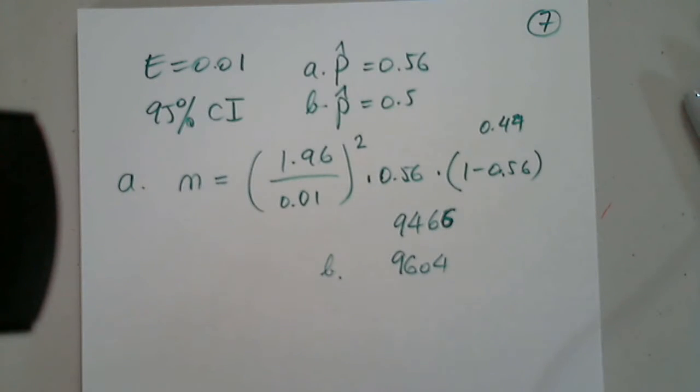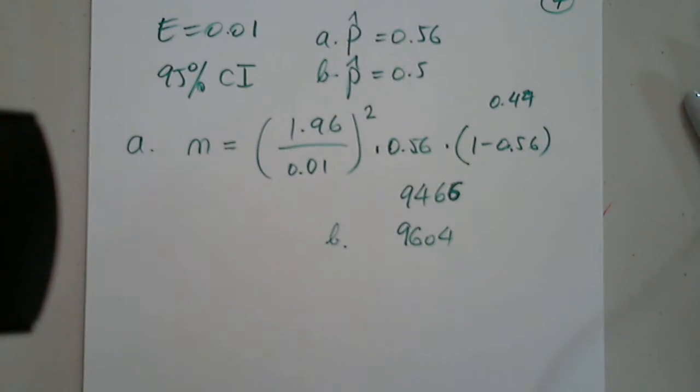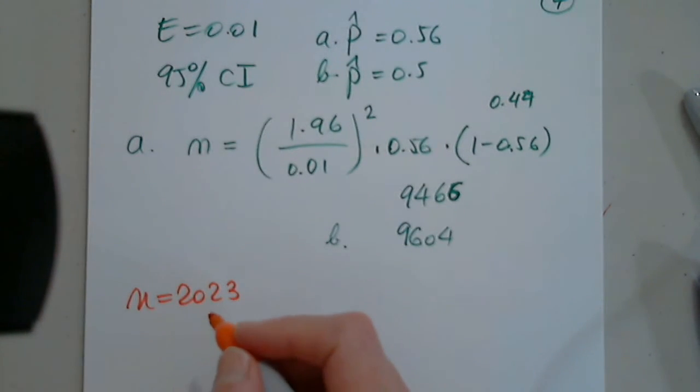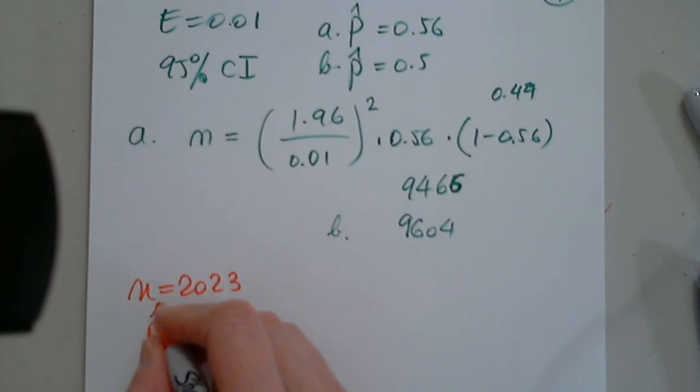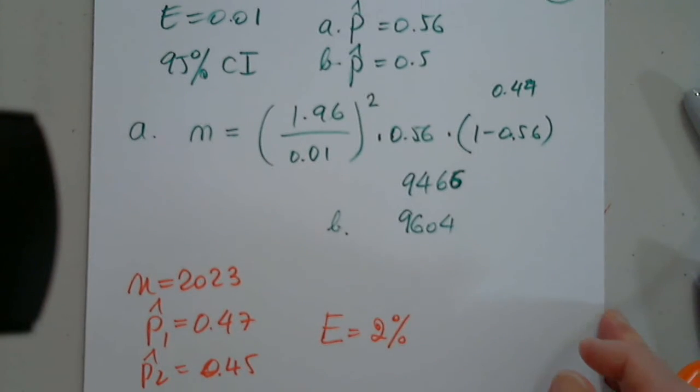Yeah, let's take a look at this one. Who would like to? I'll read it. Yes, I'm ready. A group conducted a poll of 2023 likely voters just prior to an election. The results of the survey indicated that candidate A would receive 47% of the popular vote and candidate B would receive 45% of the popular vote. The margin of error was reported to be 2%. The group reported that the race was too close to call. Use the concept of a confidence interval to explain what this means. Okay?